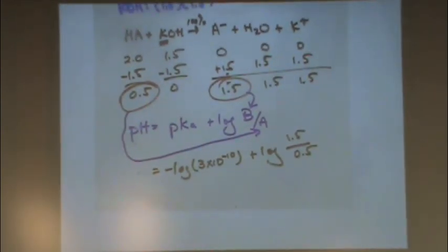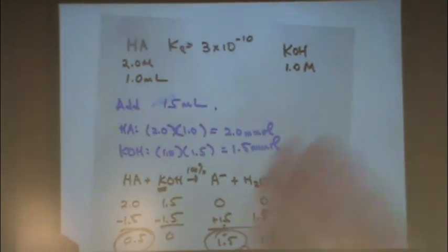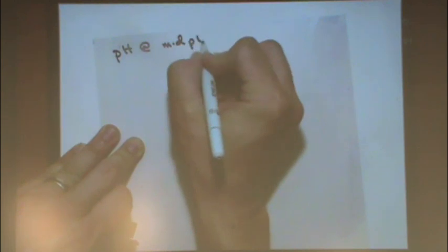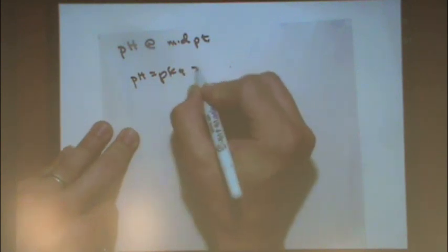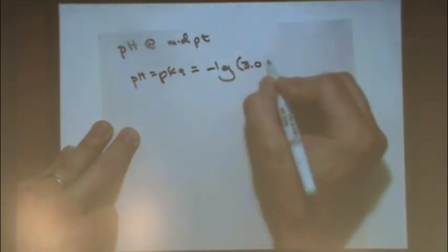Okay, another style of problem is like the second, after we did titrations, the second day I did a different style of problem. If you look back in the lecture notes, those are usually focused around the midpoint and the equivalence point. And remember those notes I gave you in the last class? Those kind of things are what you'd want to have in your brain for that kind of problem. So for example, like let's take this one. First, a question, if we just stick with this problem, would be find the pH at the midpoint.